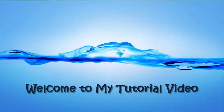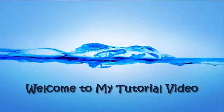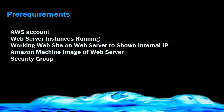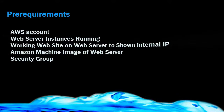Hi, welcome to my tutorial video. In this video I am going to show you how to use Amazon's Elastic Load Balancing and Auto Scaling features and how we can configure them. For this we need some pre-requirements: an Amazon account, a web server instance running, a working website on the web servers to show the internal IP, an Amazon Machine Image of the web server, and a security group.